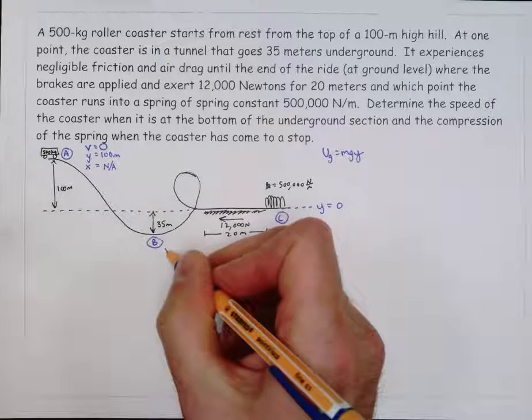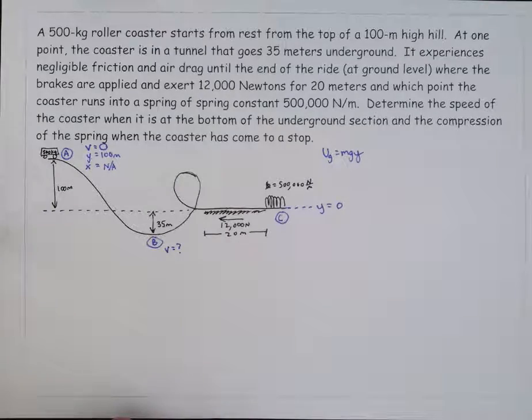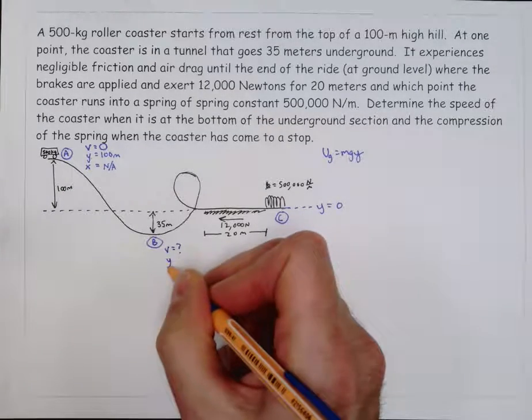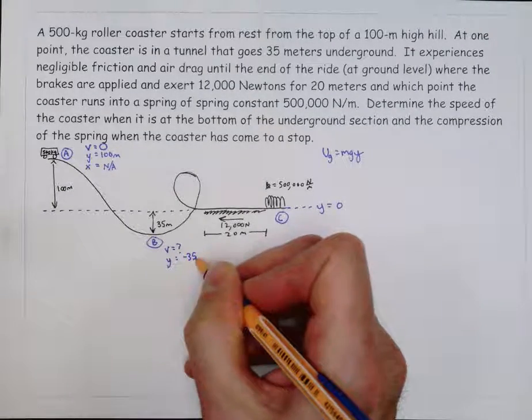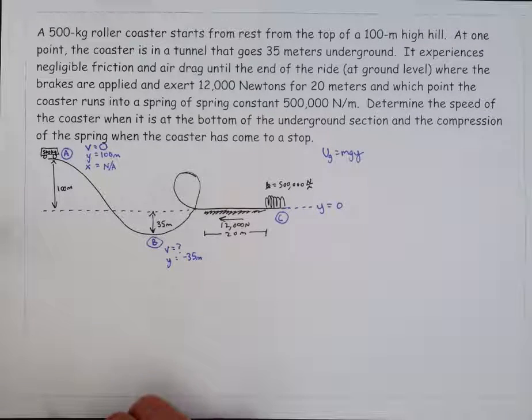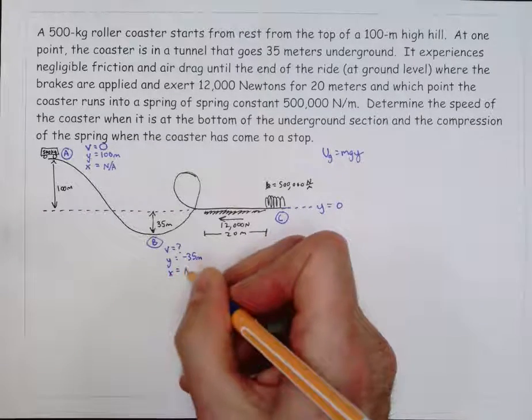Let's look at b. We do not know the speed there. That's one of the things we're going to have to calculate. We do know the y coordinate. It's negative 35, and that's really important. The fact that it's below zero means we do have to use a negative number. And again, x here is not applicable.